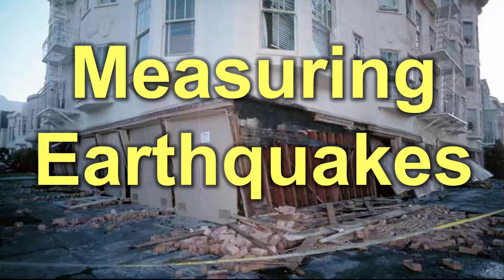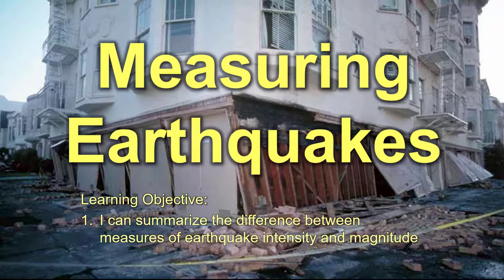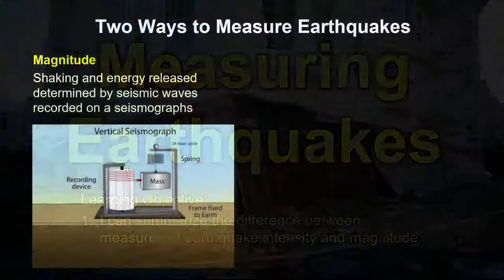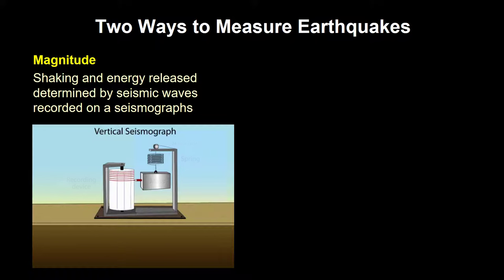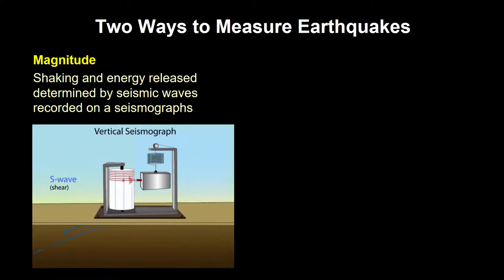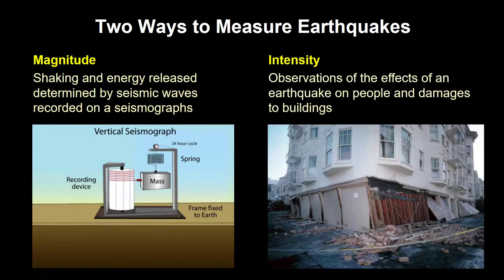The main goal of this video is to explain the difference between two measures of earthquake size, as represented by earthquake magnitude and earthquake intensity. When we discuss earthquake magnitude, we are referring to the physical shaking recorded by instruments like this seismograph. Shaking is caused by the seismic waves released by an earthquake. In contrast, earthquake intensity is all about the damage that results from the earthquake, and how many people experience the event. We'll consider these two scales separately, beginning with magnitude.